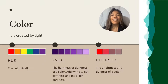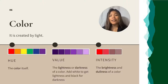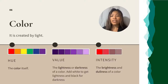Third, Color. It's one of the most dominant elements. It is created by light. There are three properties of color. First is the hue, or the color itself, such as green, blue, yellow. Then we have the value — the shades and tints, the lightness or darkness of a color; add white to get lightness or black for darkness. And lastly, the intensity — it is the brightness or dullness of a color.